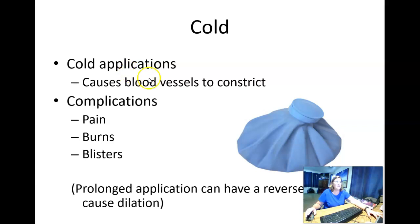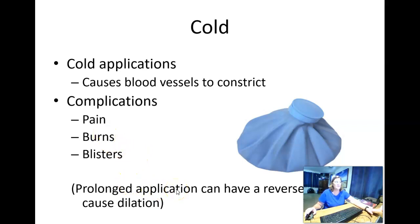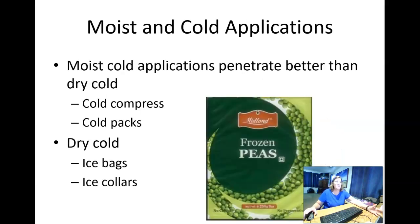Cold applications cause blood vessels to constrict, narrow, and decrease blood flow to an area. Complications of using cold include pain, burns, and blisters. Your book also mentions that a prolonged cold application can have a reverse effect. The key concepts are: heat dilates blood vessels, cold constricts blood vessels. As far as moist cold versus dry cold — moist cold works faster. Examples include cold compresses and cold packs for moist cold, and an ice bag or ice collar for dry cold.